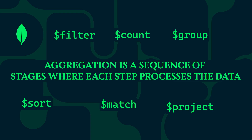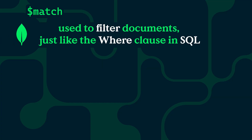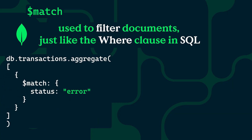Let's go through some examples. Let's start with the first stage: the dollar match. It's basically used to filter documents, just like a WHERE clause in SQL, so you only keep the data that matches your condition. For example, imagine we have a transactions collection and we want to filter only the documents where the status is equal to error.